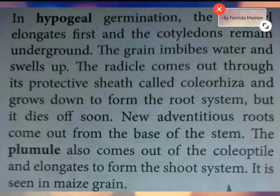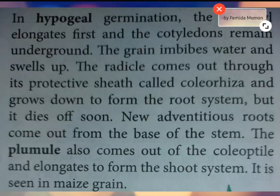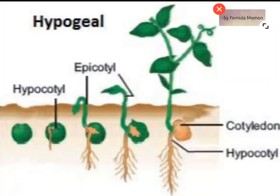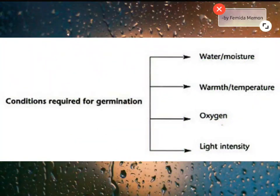In hypogeal germination, the epicotyl elongates first and the cotyledons remain underground. The grain imbibes water and swells up. The radicle comes out through its protective sheath called coleorhiza and grows down to form the root system, but it dies off soon. New adventitious roots come out from the base of the stem. The plumule also comes out of the coleoptile and elongates to form the shoot system. It is seen in maize grain. Conditions required for germination are water, suitable temperature, and the right amount of oxygen.